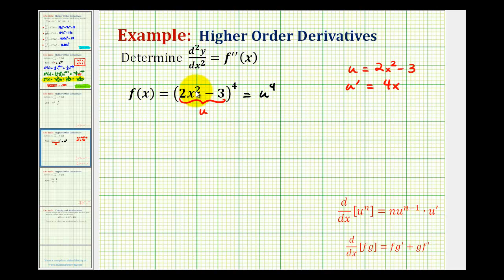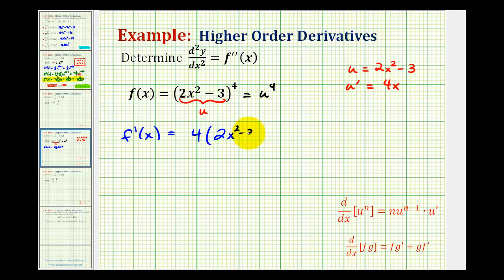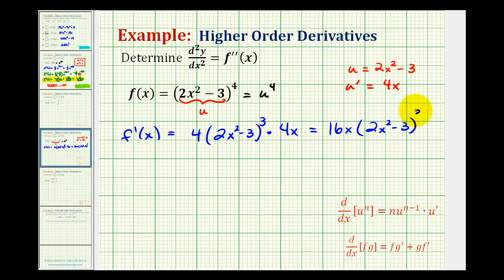Now we have all the information we need to find the first derivative of the function. The first derivative is going to be equal to the derivative of u to the fourth with respect to x. So we'll have four u to the third times u prime, or four times the quantity two x squared minus three to the third, times u prime, which is four x. The first derivative simplifies to sixteen x times the quantity two x squared minus three raised to the third power.